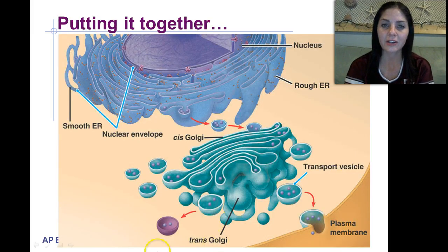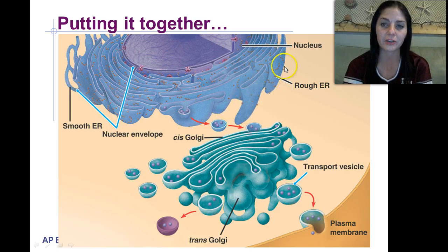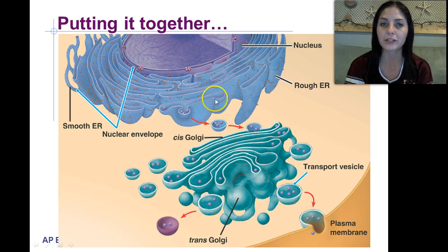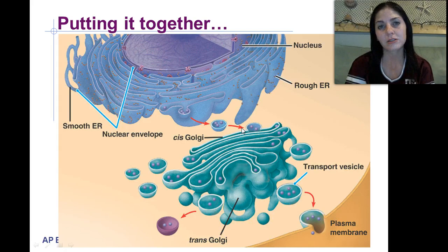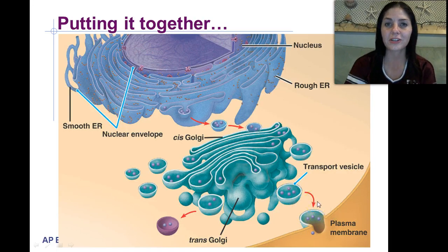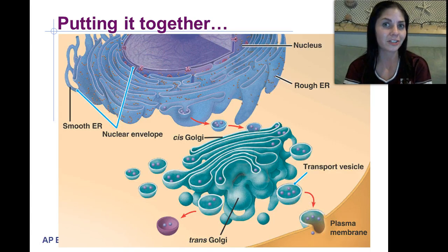Putting it all together: macromolecules or proteins are synthesized in the rough and smooth endoplasmic reticulum. In the rough ER, those proteins are put into vesicles that are pinched off and transported to the cis side of the Golgi apparatus. They go through tagging and modification and eventually reach the trans side, where they're pinched off into vesicles and shipped to parts of the cell that need them — like getting shipped to the plasma membrane. That concludes our lecture on the Golgi apparatus and the endoplasmic reticulum. Stay tuned for the next lecture covering lysosomes, peroxisomes, vacuoles, and vesicles.